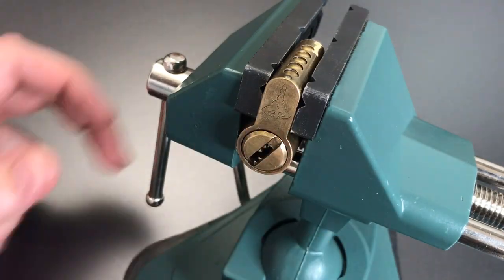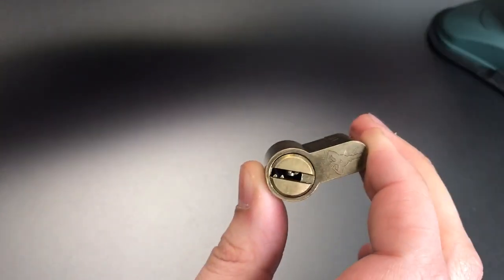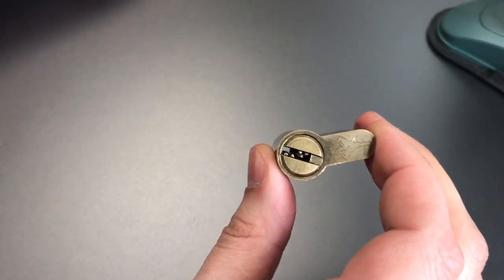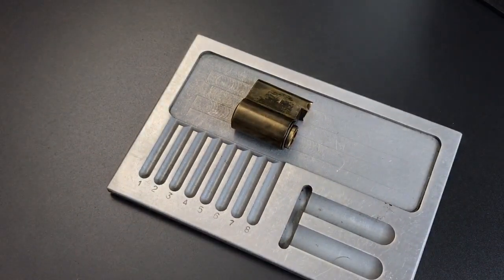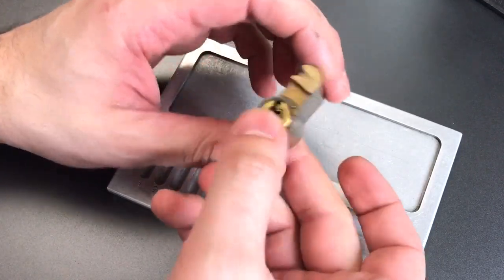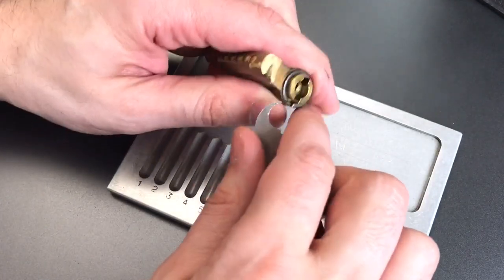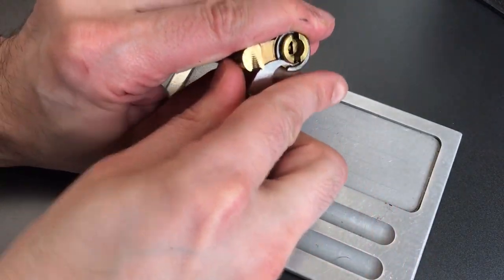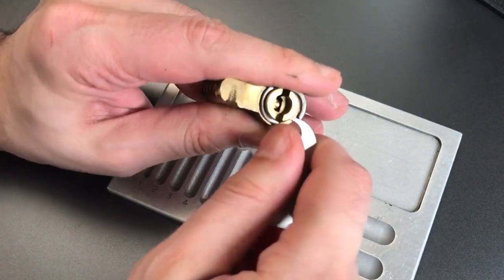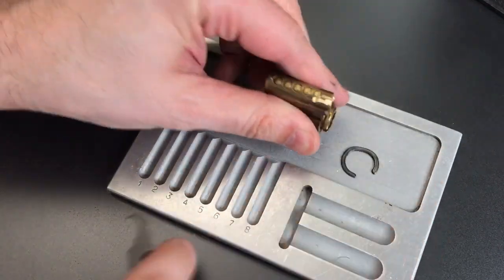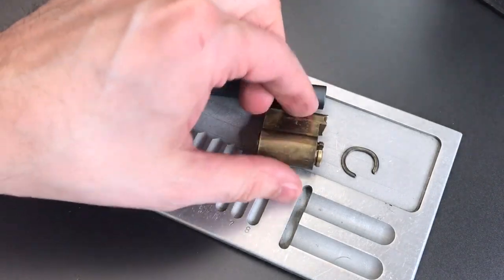Let's take this lock apart, and I can show you those old style driver pins. We can lock this up, because I do have a key. And let's take this C clip off. Now I need the key and a follower, and we should be able to open this up.